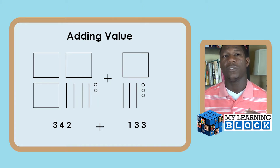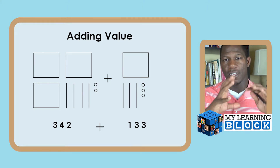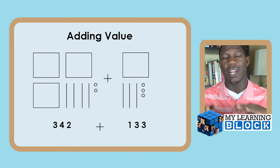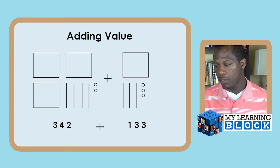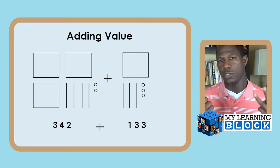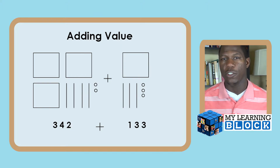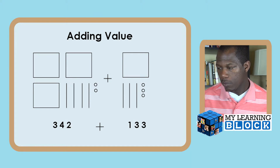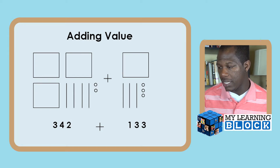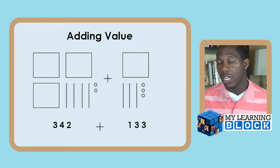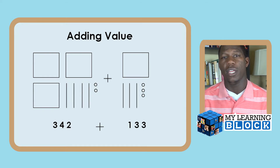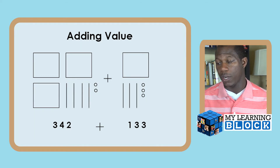When teaching this concept, you want your child to understand that they're adding the values of numbers, not just the digits themselves. Anybody can add three plus one — but it's not three plus one, it's 300 plus 100, which gives us 400. In this image, the 'adding value' image, we see three hundreds and one more hundred, so we add those together, then add our units and rods.